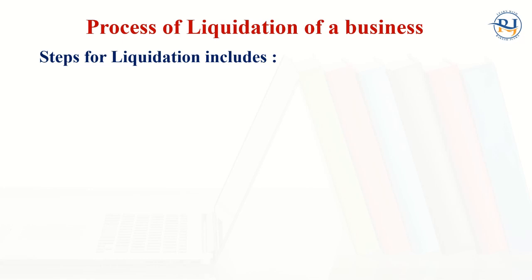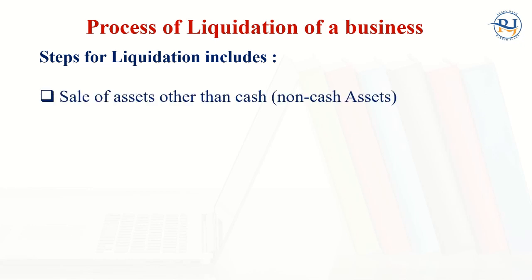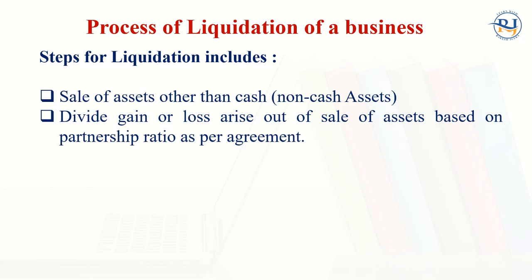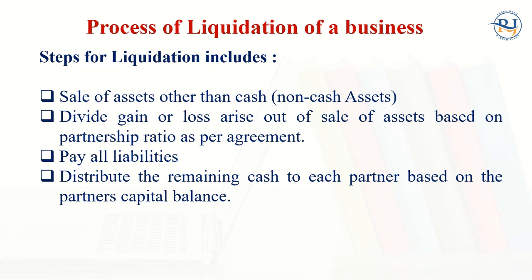The steps for the liquidation include the sale of assets other than cash — that is, the non-cash assets, maybe the building, plant, machinery, or equipment. We divide the gain or loss arising from the sale of the assets based upon the partnership ratio as per the partnership agreement. The money realized from the sale is used to pay off all the liabilities and debts, and the rest is distributed among the partners based upon their capital balance.